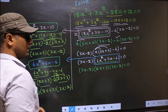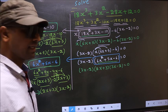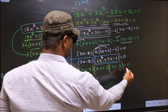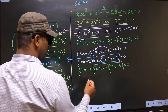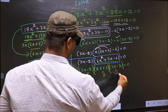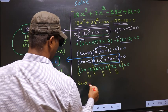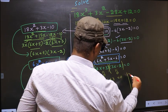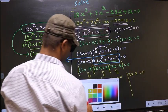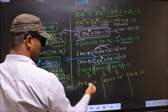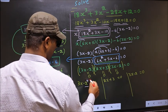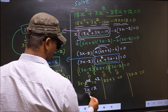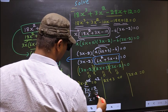We are told to solve, which means we should get the values of x. We have a product of brackets equal to 0, so we equate each bracket to 0. That is: 3x - 2 = 0, so add 2 giving 3x = 2, divide by 3 giving x = 2/3. And 2x + 3 = 0, so subtract 3 giving 2x = -3, divide by 2 giving x = -3/2.